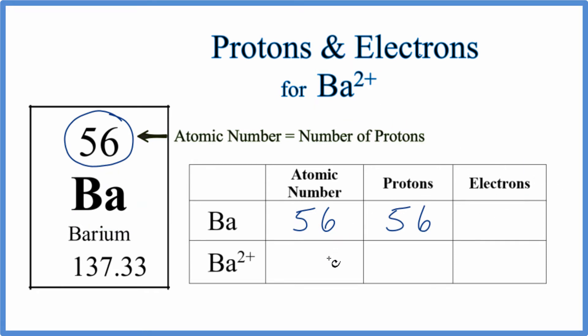So everything else is the same. The atomic number for barium 2 plus is 56. The number of protons, 56. It's the electrons that are going to be different.